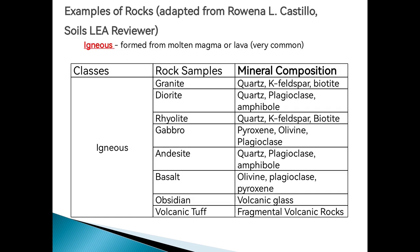These are examples of igneous rocks. As I told you, igneous rocks come from molten magma or lava. An example is granite, which contains a lot of quartz, potassium feldspar, and biotite for their mineral composition. We also have diorite, which is composed of quartz, plagioclase, and amphiboles. We have rhyolite with quartz, potassium feldspar, and biotite. Gabbro — these are dark rocks mostly composed of pyroxene, olivine, and plagioclase. We also have andesite, basalt, obsidian, and volcanic tuff. As you can see, the rocks are composed of minerals that are attached to them.